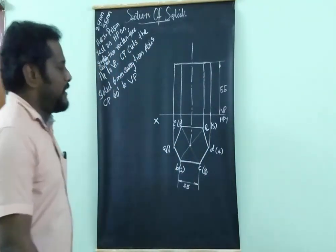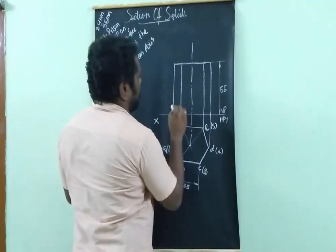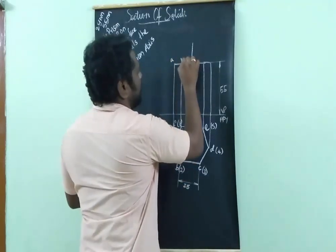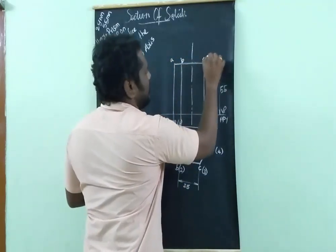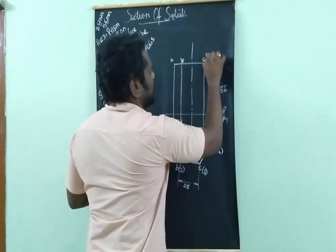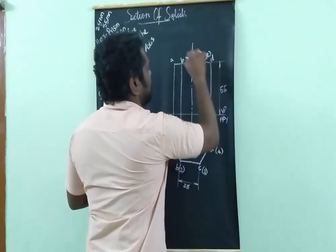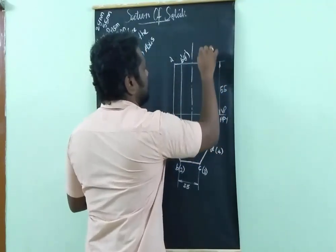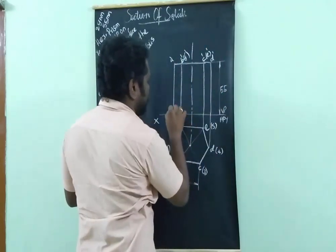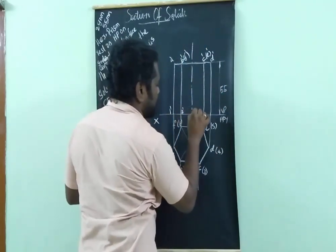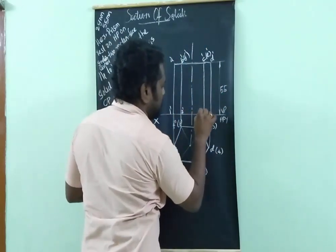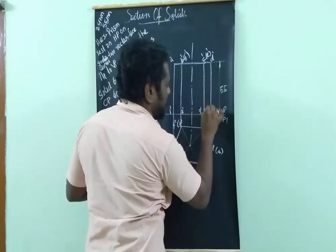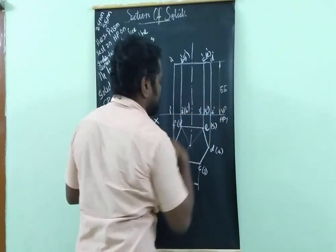Now transfer all the points to the front view: point A, B, C, D, E, F on the bottom, and 1 dash, 2 dash, 3 dash, 4 dash, 5 dash, 6 dash on the top. The simple position is now completed.